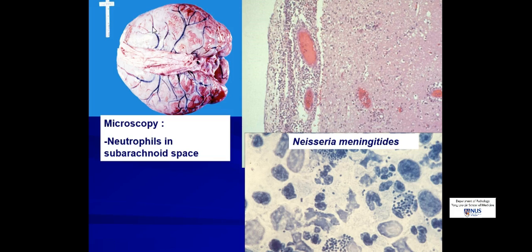Grossly, this is a fresher example where you can see this kind of milky, yellowish, greenish fibrinopurulent exudate within the subarachnoid space. So the diagnosis here is purulent meningitis, and this is usually caused by bacterial infection.